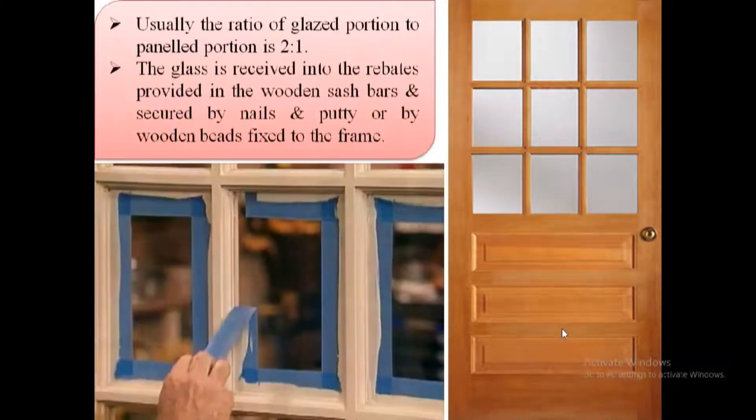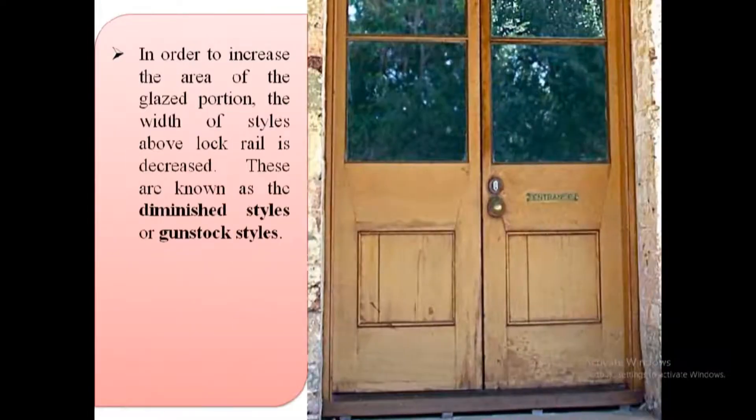These doors may be either fully glazed or they may be partly glazed and partly paneled. When we use partly framed doors and partly glazed, the glass panels must be provided at elevated level from the floor.